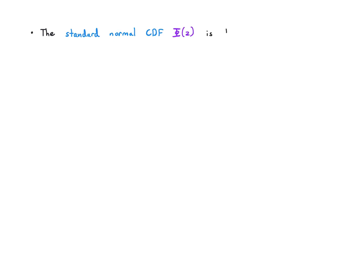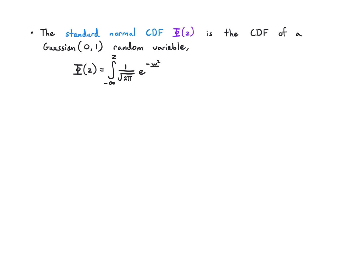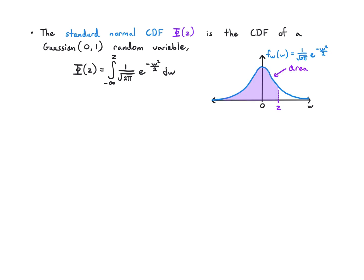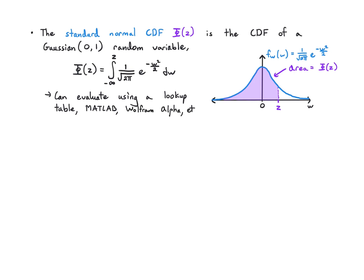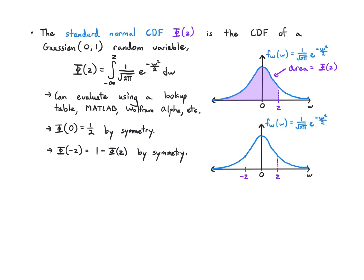So what is this Φ function? The standard normal CDF, Φ(z), is the CDF of a Gaussian(0, 1) random variable. A Gaussian(0, 1) has PDF (1/√(2π))·e^(−w²/2). Integrating up to z gives the area, which is the CDF of this standard normal. We can't compute this integral in closed form — it's not something basic calculus allows. We evaluate it numerically using a lookup table, MATLAB, a scientific calculator, or Wolfram Alpha. By symmetry, Φ(0) = 0.5, since you've captured exactly half of the symmetric hill.